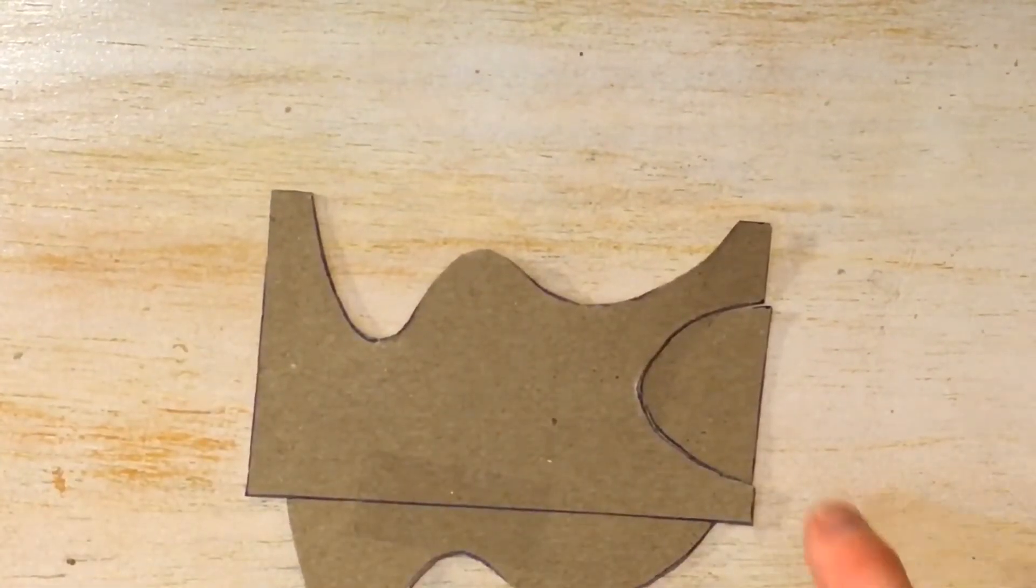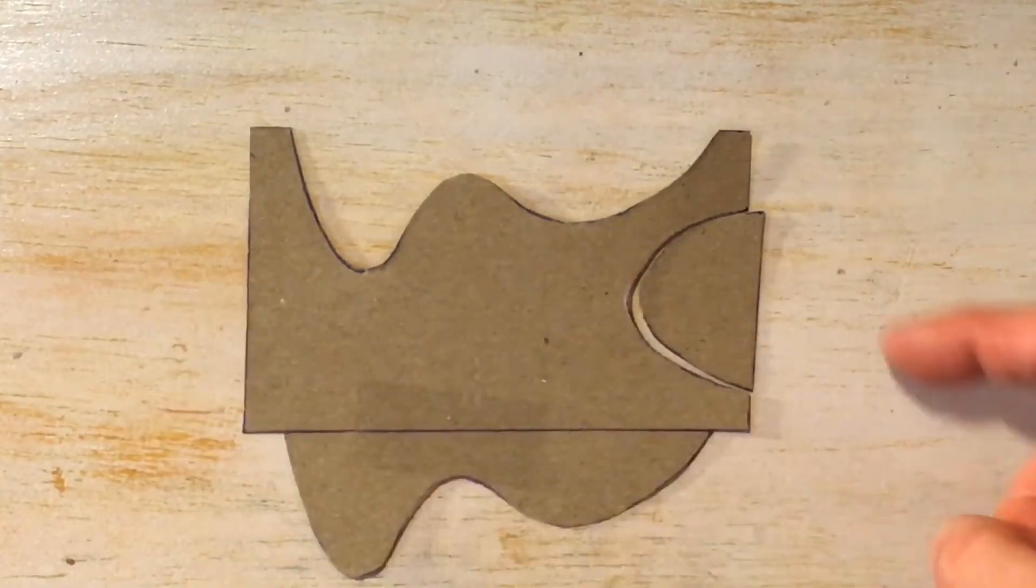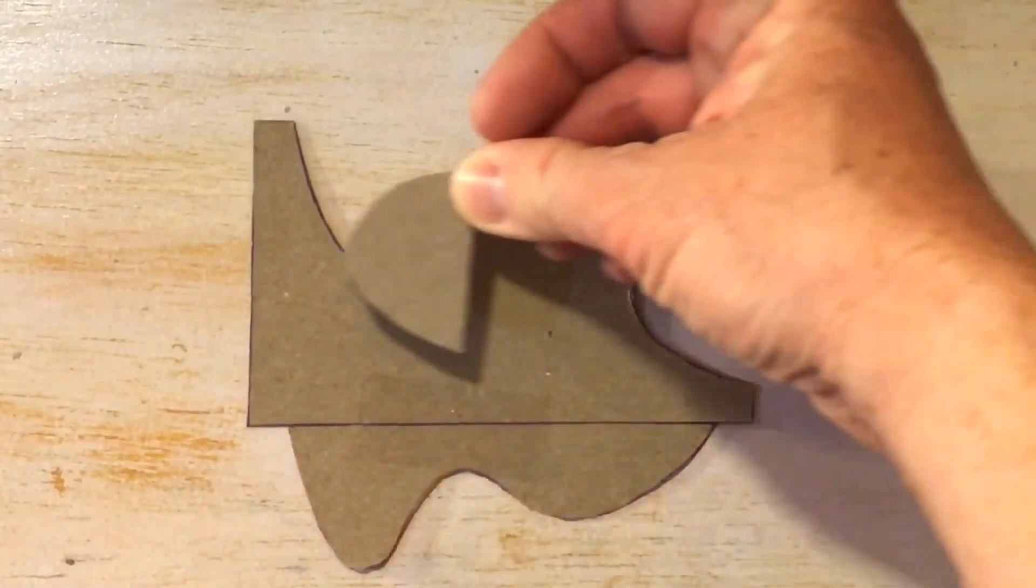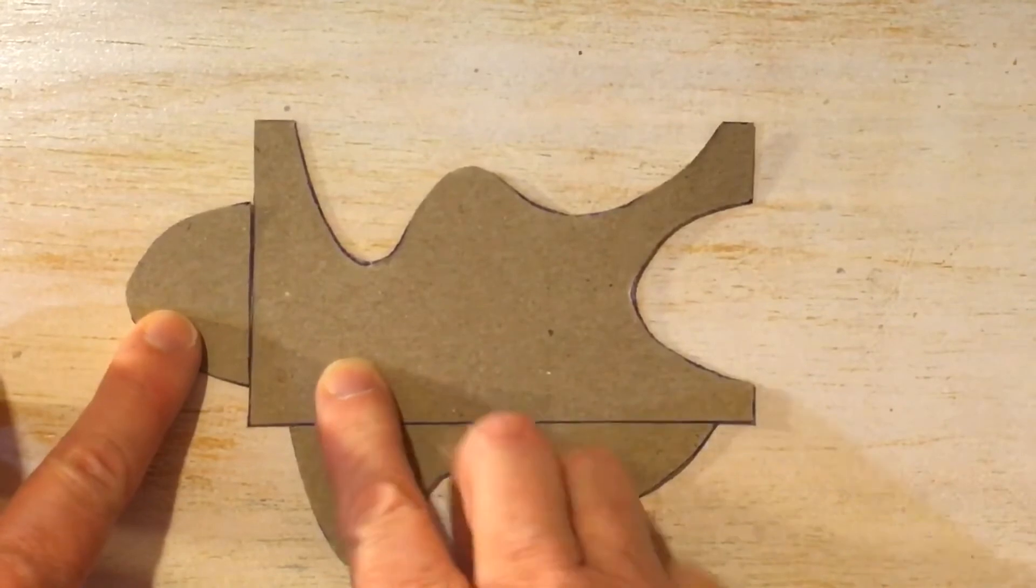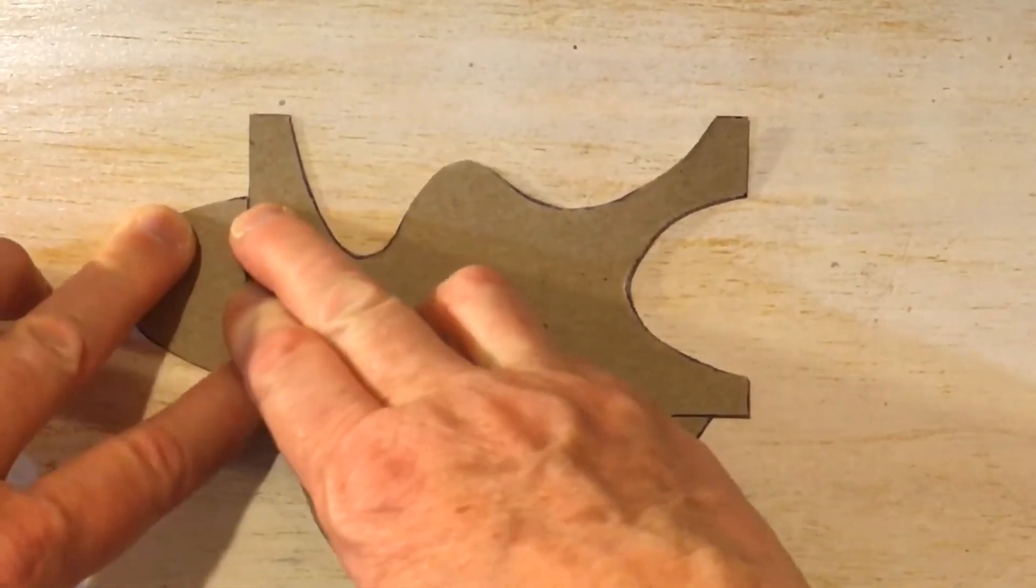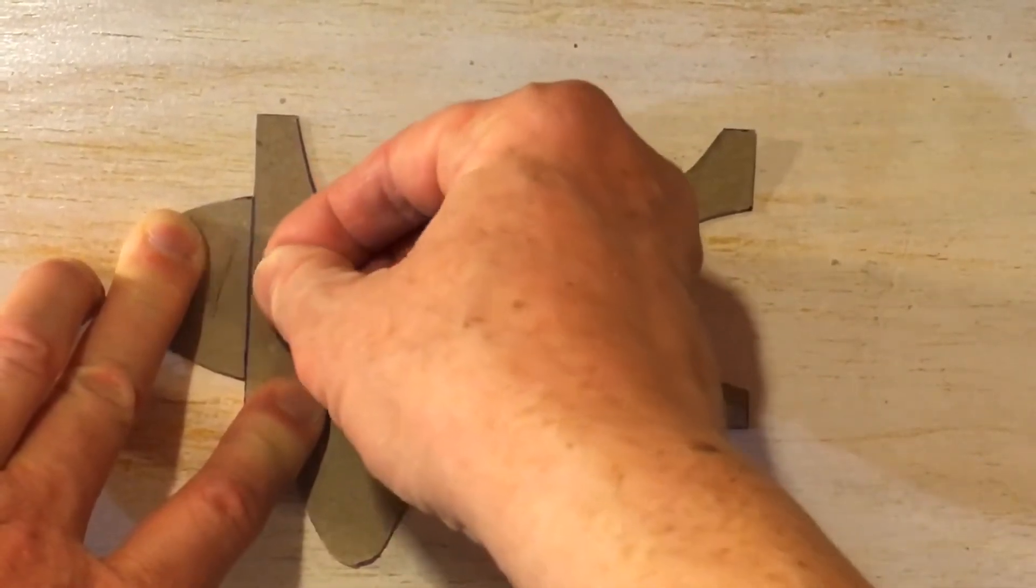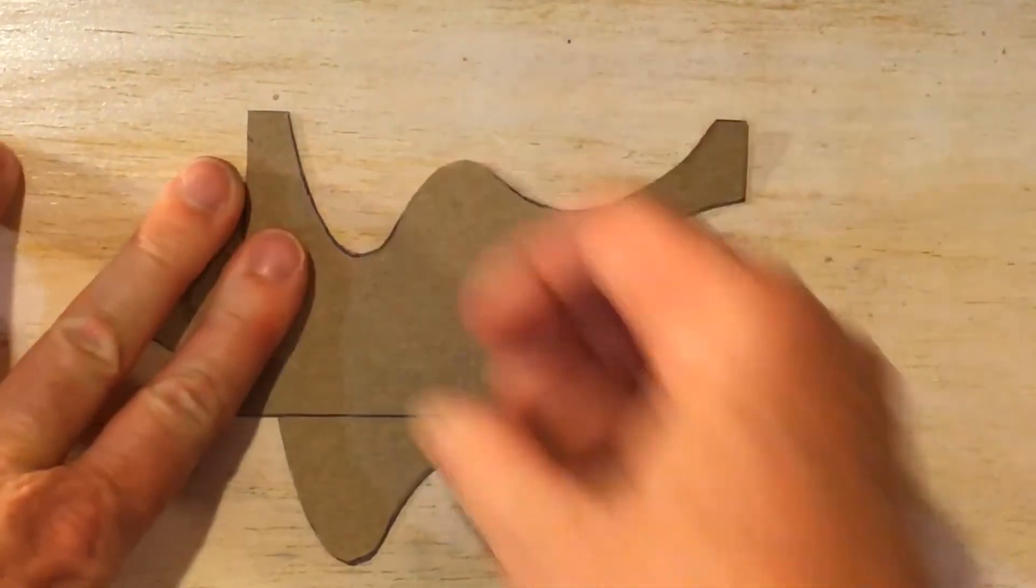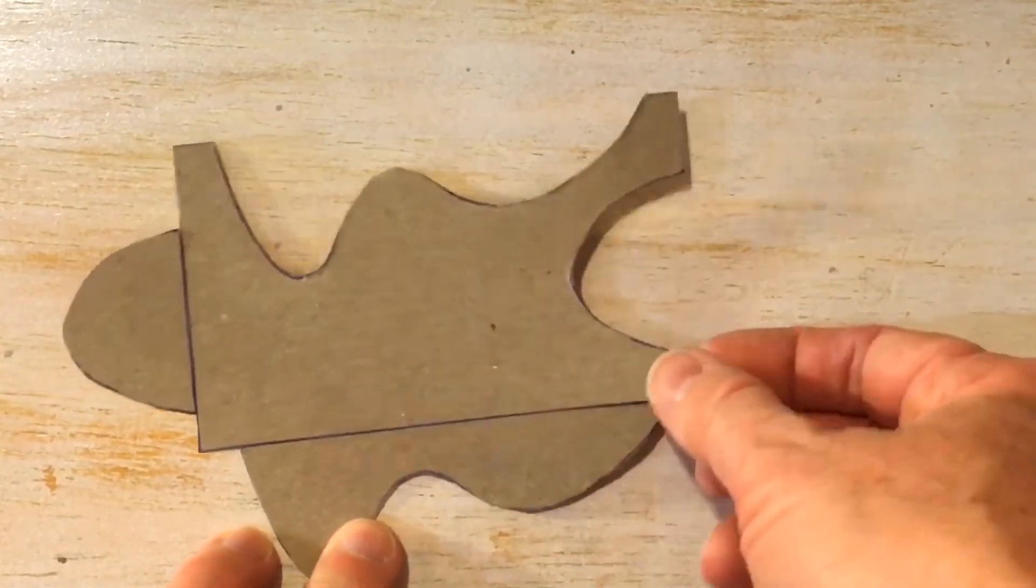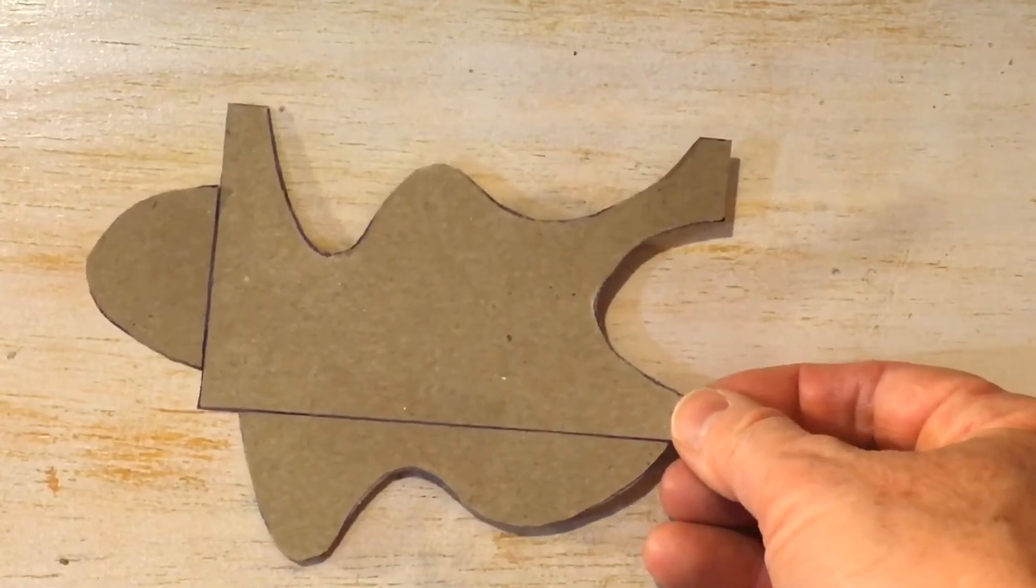Now with the other side we're going to do exactly the same. We're going to move it across to that side keeping the distance there and there the same. Checking and looking to get my piece of tape and I'm going to tape it down. Now I have a tessellation piece that I have made out of cardstock cardboard piece of cereal box.